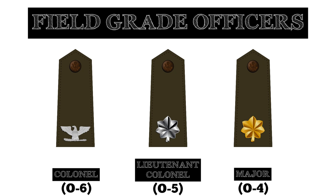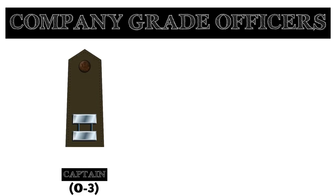Next in descending order of seniority are the ranks for company grade officers. The rank of captain is the highest rank for company grade officers. A captain generally commands and controls company-sized units of 60 to 200 soldiers. They may also have teaching roles at combat schools or special training sessions, as well as serving as staff officers at battalion level command posts. Captains wear a rank insignia featuring two silver bars.